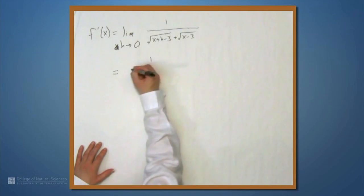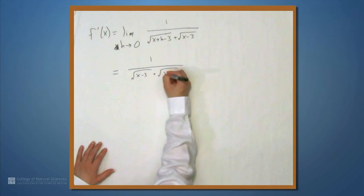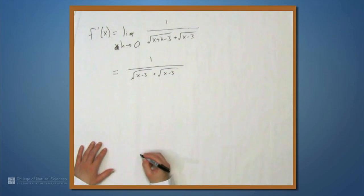And we get 1 over the square root of x minus 3 plus the square root of x minus 3. And this simplifies to 1 over 2 times the square root of x minus 3. And that's how you find the derivative of f by definition.